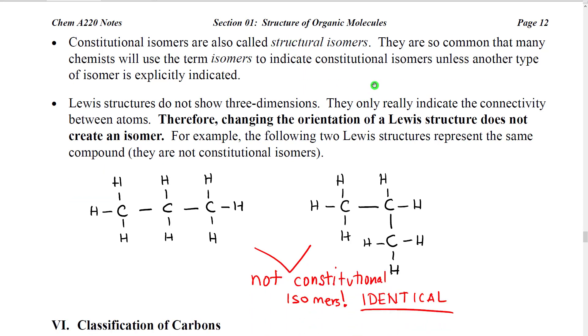In the past, constitutional isomers were often called structural isomers. That has kind of fallen out of favor, because really structure means so many different things. So, instead, as I indicated earlier, constitutional isomer is such a typical type of isomer that many chemists will just call them isomers. If you hear the term isomer by itself, it probably means constitutional isomer, unless another type of isomer is explicitly indicated.